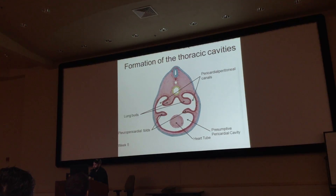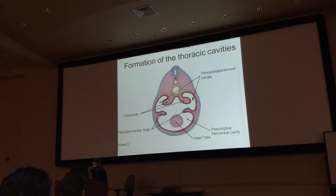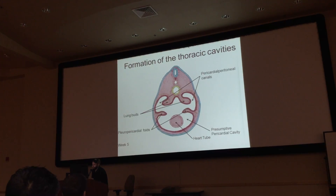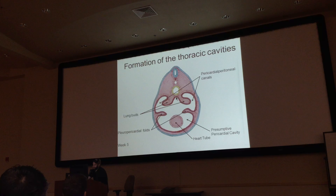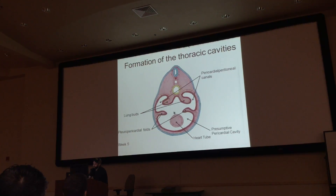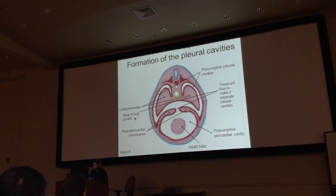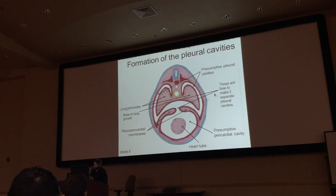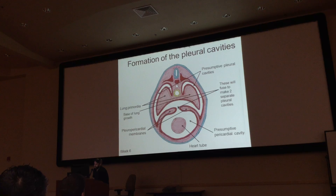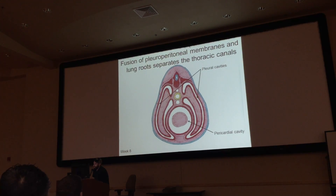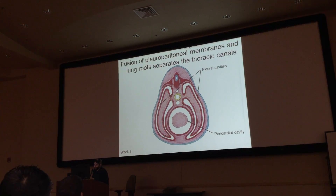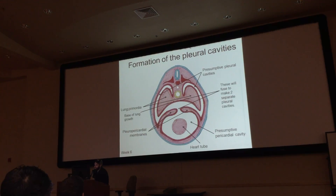These canals would connect to the abdominal cavity if there weren't a diaphragm there. The presumptive pericardial cavity is here, and the heart tube becomes your heart. The lungs push outward, and the base of lung growth pushes downward and fuses with the two pleuropericardial folds — that's how you get the two pleural cavities. When these two fuse, they form the dividing line between the pleural cavities. What forms your pleural cavities? Maybe the base of lung growth forming the pleuropericardial membranes.